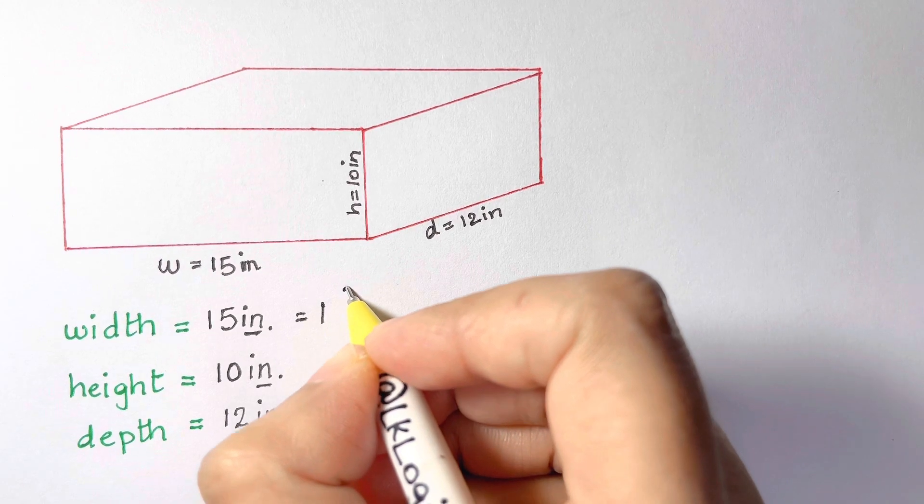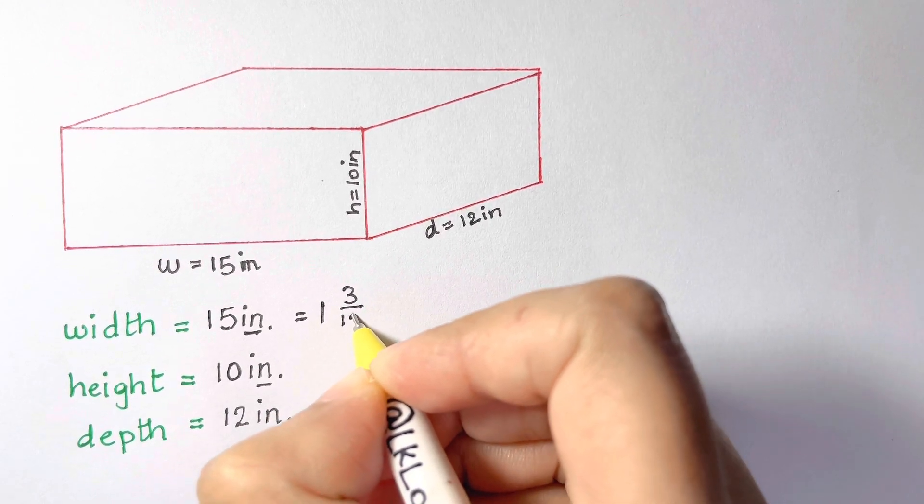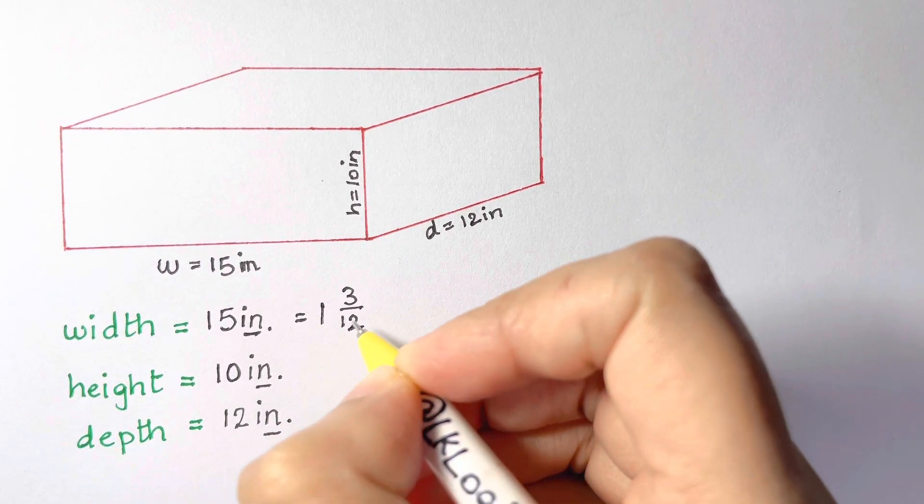15 inches is one foot and three twelfths of an inch, so one foot three twelfths feet.